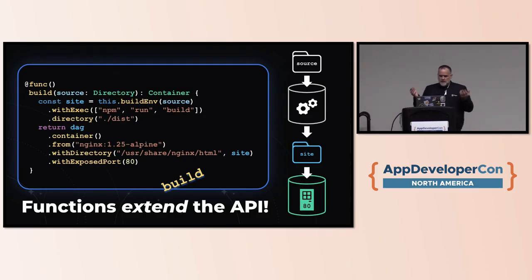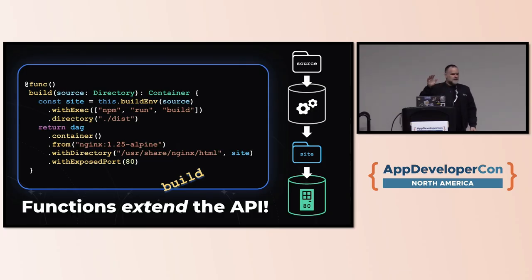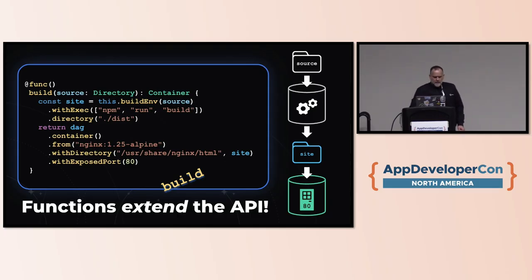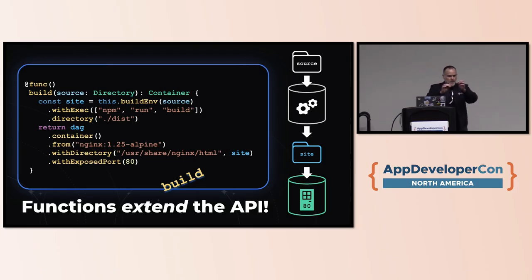Here's an example of a function in TypeScript with Dagger — a build function. If you've written Dockerfiles, the bottom part will look familiar: DAG container from, with directory, with exposed port. We're building up a container, adding content, exposing a port, getting ready to serve it as a service. That DAG variable is your client into the API. With this function, we've extended the API — there wasn't a build built into DAG, but using these composable building blocks, we made a new thing.